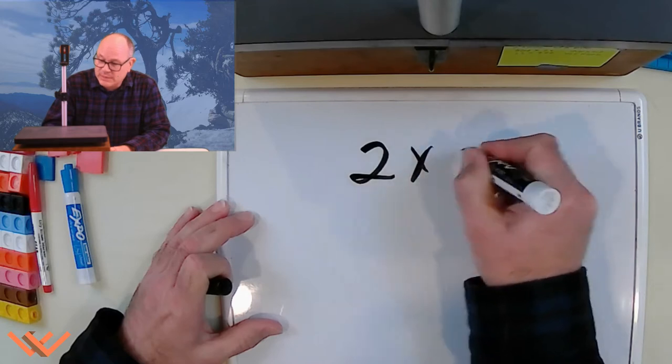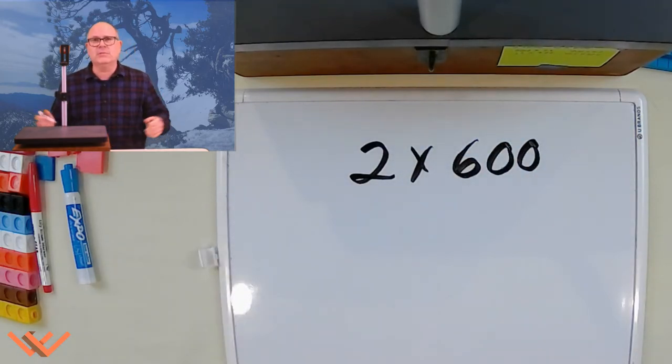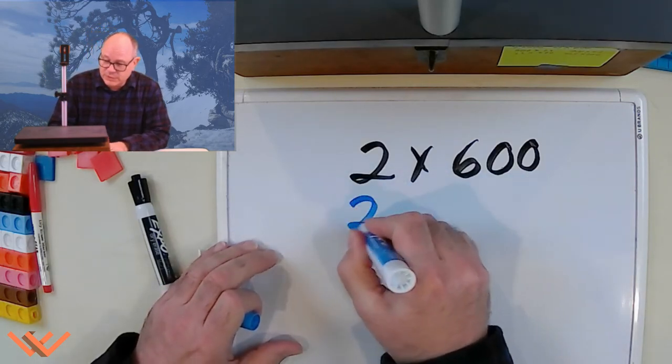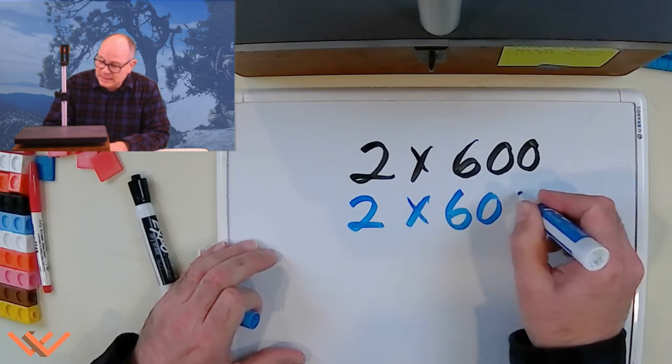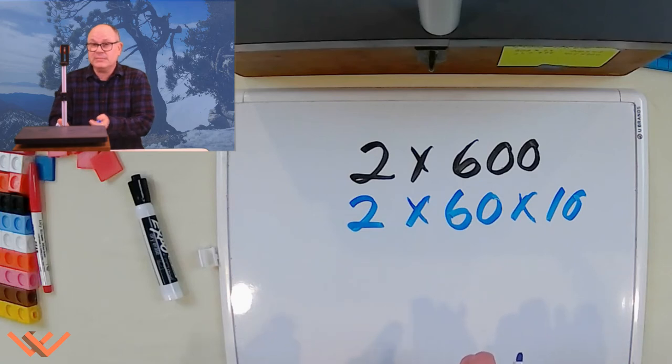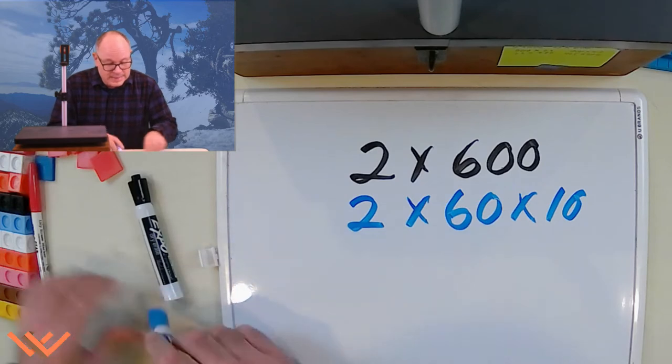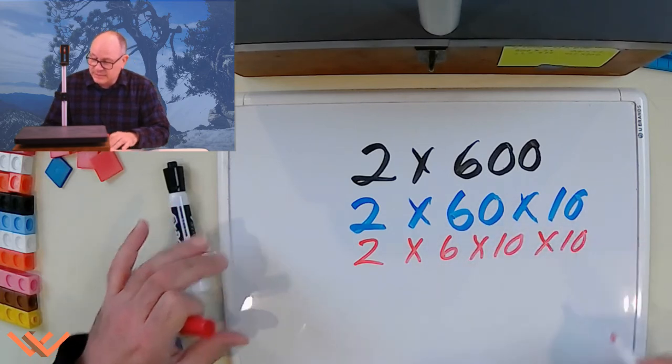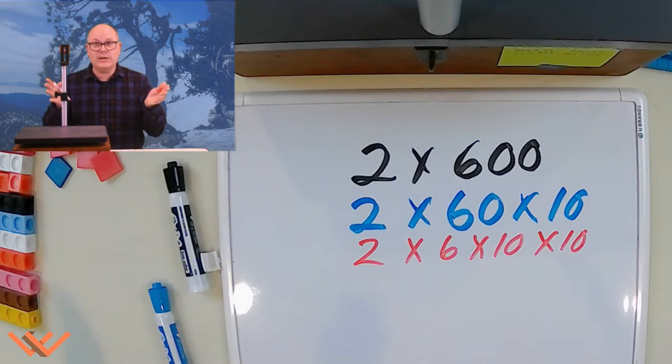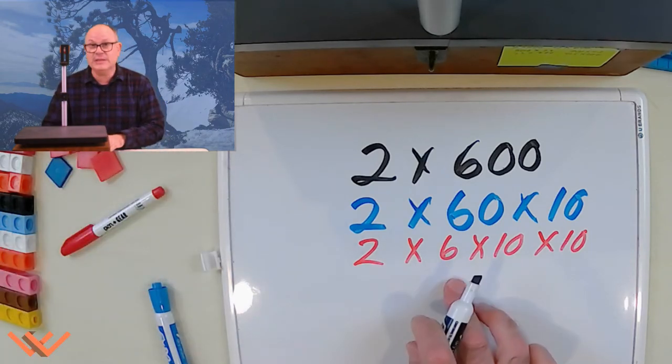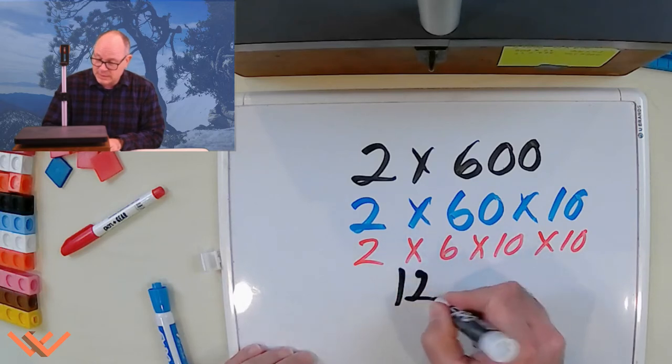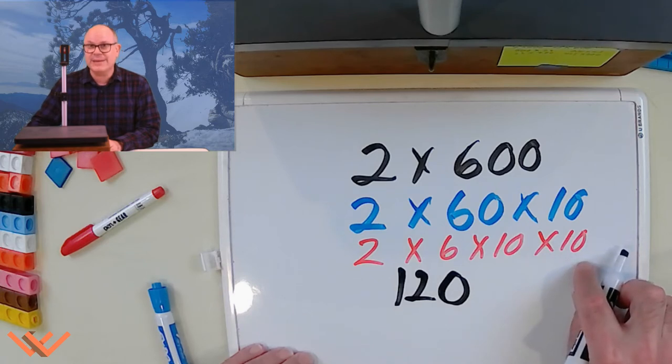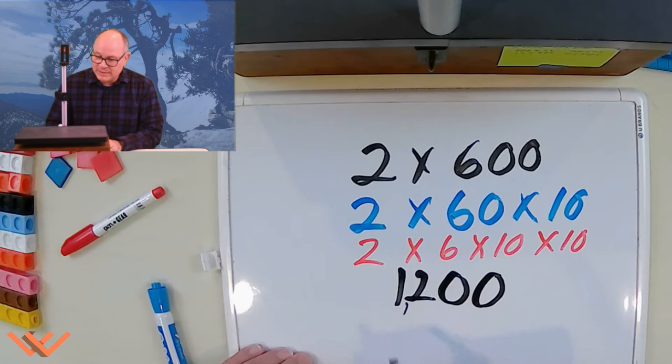So we have 2 times 600. You're going, oh no Mr. Woods, I don't know what to do. Well, let's break it down, because if you look at this, this is 2 times 60 times 10. Remember how to do it by tens? You can break it down even further. So 2 times 6 times 10, which is 6 times 10, times 10. Because 2 times 6 is 12. And remember, when we were doing it by tens, we added that zero here from this tens. So it would be 120 times 10, and you do the same thing. Add another zero. So now we have 1,200.